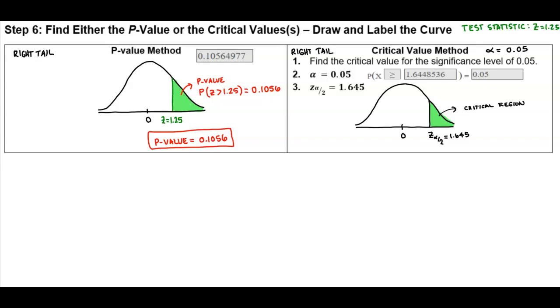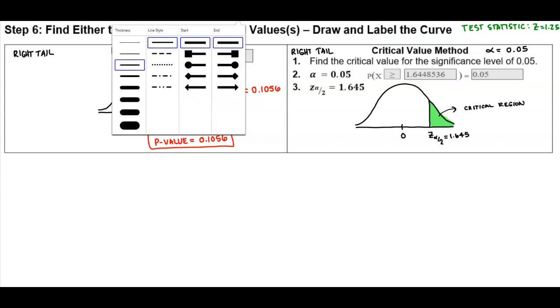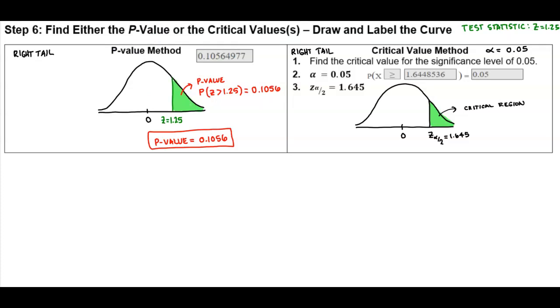Now that we've done that, now we need to look at the test statistic and determine where is the test statistic location according to this graph. So if we look at the test statistic, 1.25 is going to be somewhere here.